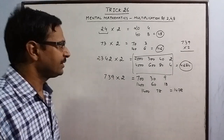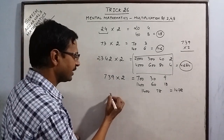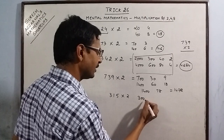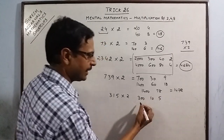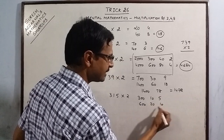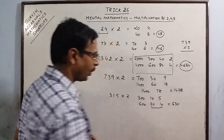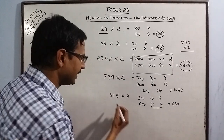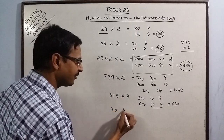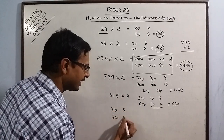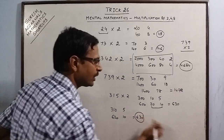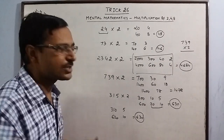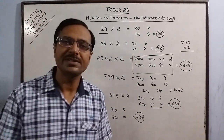You can also break numbers for convenience. For 315 into 2, call it '3...10...5' and double: 6...20...10, which gives 630. You can break the number as per your convenience and thinking. Similar observations apply when multiplying numbers by 4.